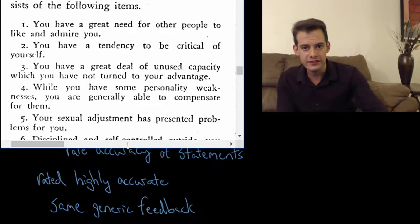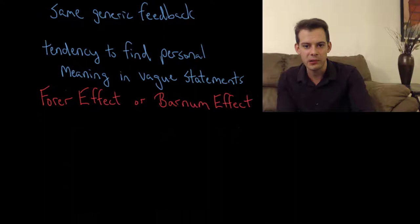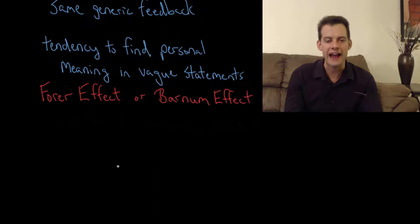Okay, so what we can see is that people have this tendency to find personal meaning in vague statements. So we give this generic feedback and everybody kind of finds a way to make it true. And as a result they think that the statement is an accurate description of their personality. So this is something we have to be careful about when it comes to assessing the accuracy of personality tests.